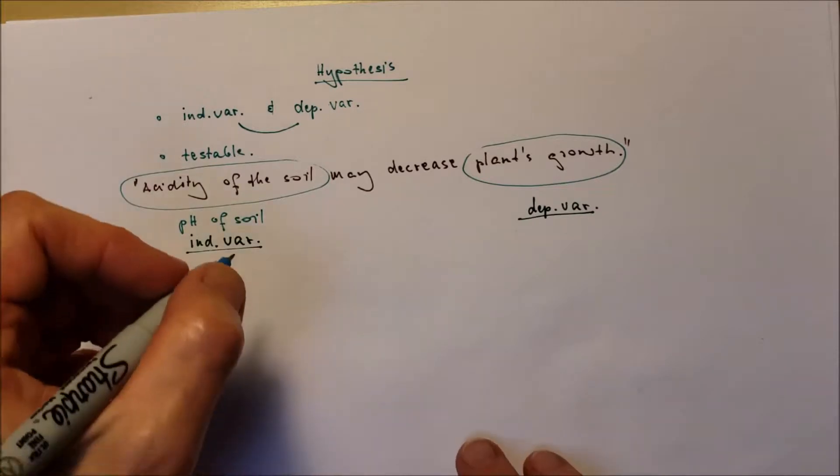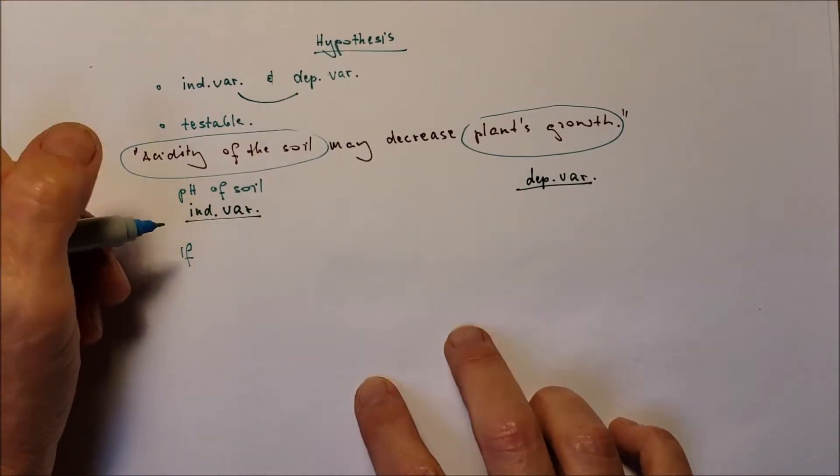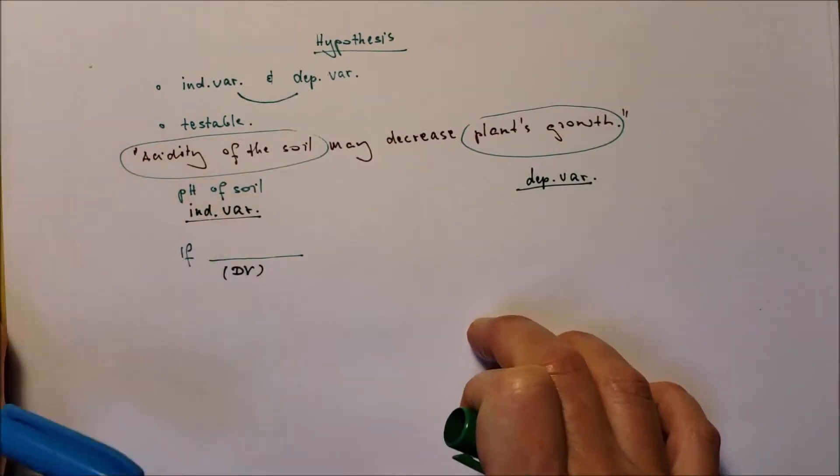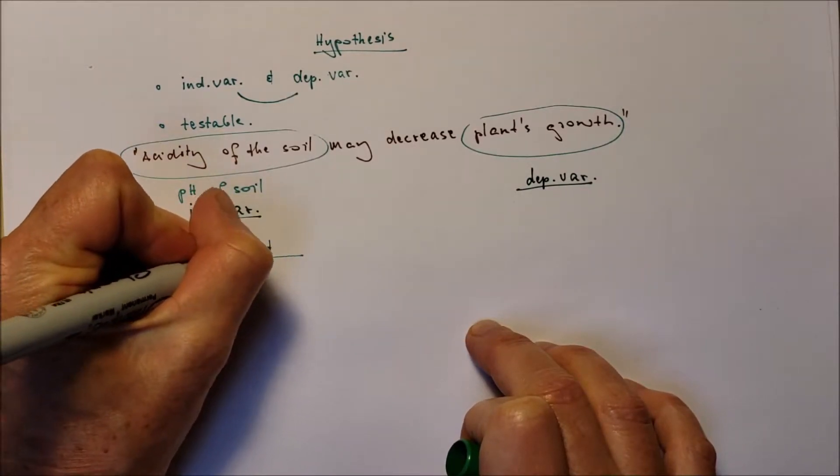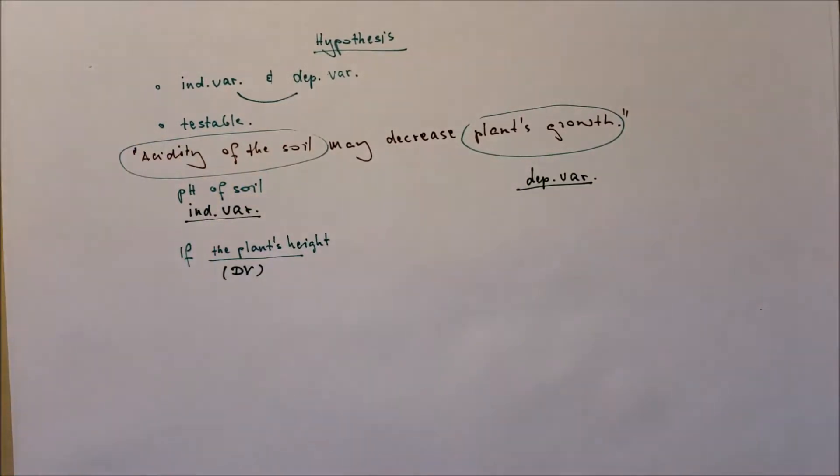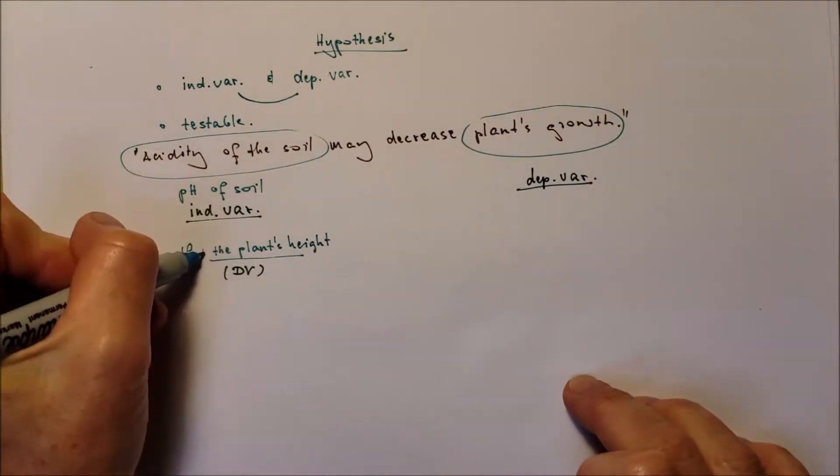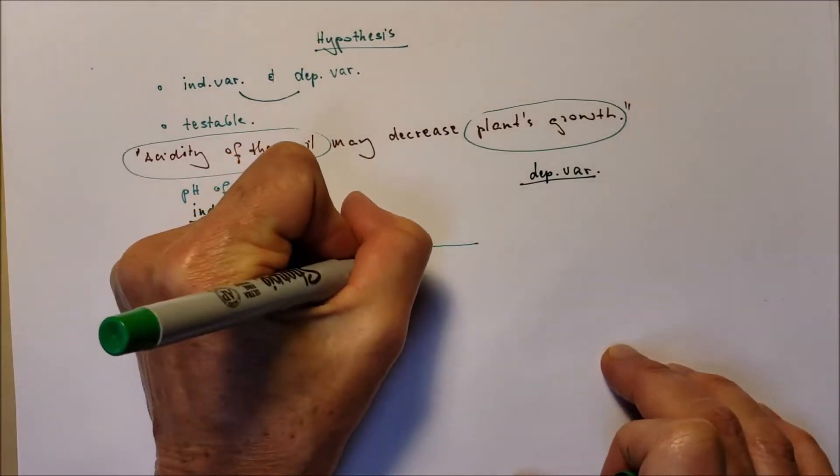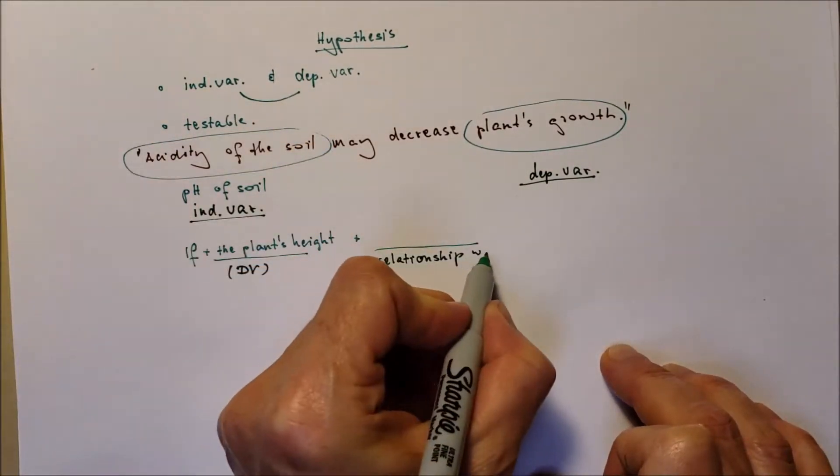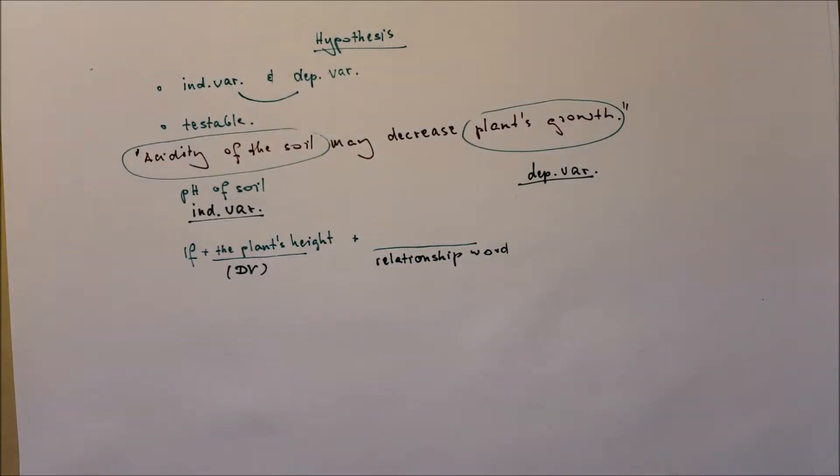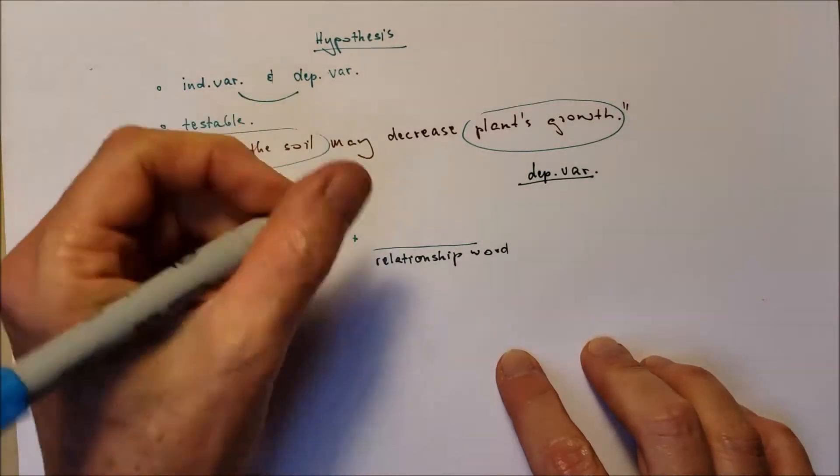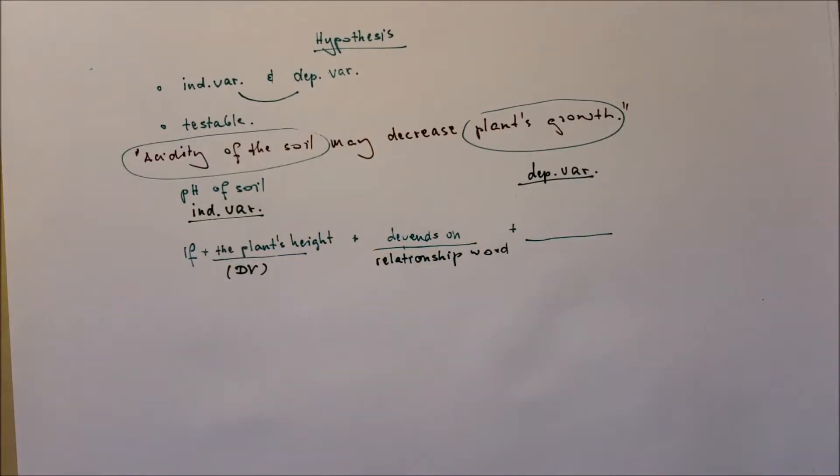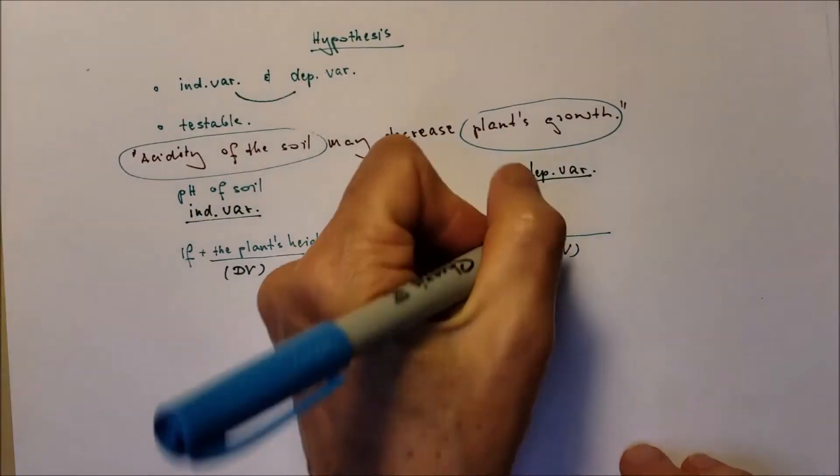So the template to write a testable hypothesis is if, and we add the dependent variable, the plant's height. We add a relationship, how this dependent variable relates to the independent variable. Relationship words can be depends on, effects, results in. So we will add depends on.